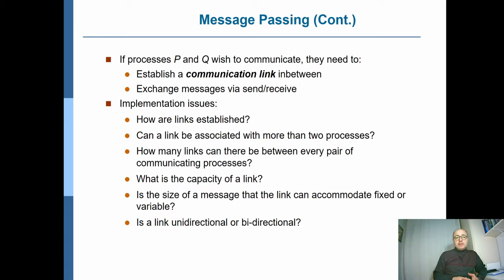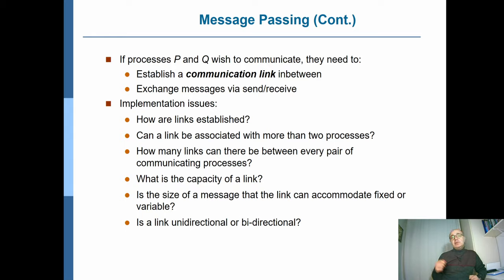If we have two processes, say P and Q, that want to communicate, you should first set up a link between these two processes, and then start exchanging messages using these send and receive primitives. There are some questions to discuss: how are the links established between P and Q? Can a link have more than two processes — is it possible to have a link between P, Q, and also R? How many links can there be between every pair of processes? Can P and Q have multiple links — one for exchanging data and the other for exchanging control signals, where one tells what to do with the data and the other carries the data itself?